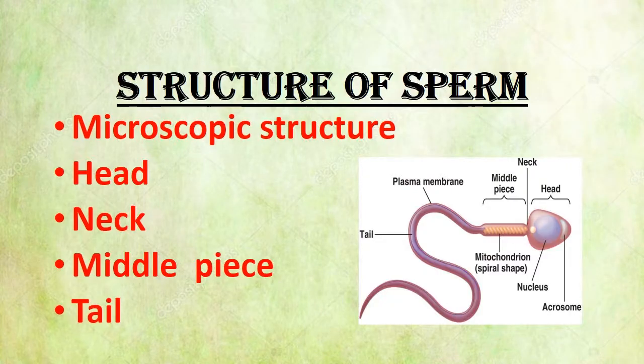Hi students, here is about the structure of sperm. Sperm is a microscopic structure. It mainly contains four parts: head, neck, middle piece, and tail.